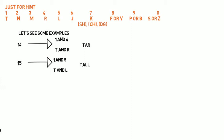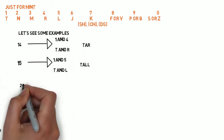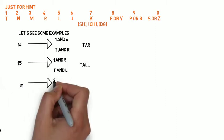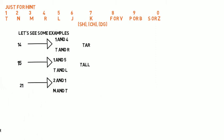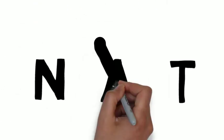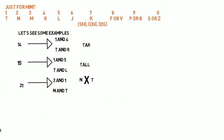If inserting the vowel A does not lead to an appropriate word, proceed to other vowels, always following the sequence of the alphabet. For instance, 21 consists of 2 (N) and 1 (T). Inserting A gives 'nat', which is not meaningful. Proceeding to the next vowel E gives 'net', which is satisfactory.